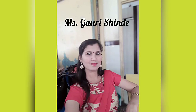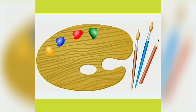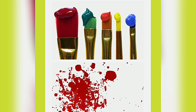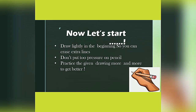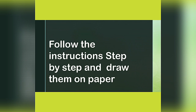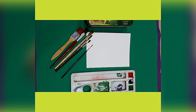Hello students, myself Miss Gauri Shinde. Today we are going to start with drawing subject. Children, today we are going to learn different types of lines with painting colors. Before starting, read these instructions carefully. Before you begin, you need this material: painting colors, pencil, brush, palette, and poster colors. Now let's start.